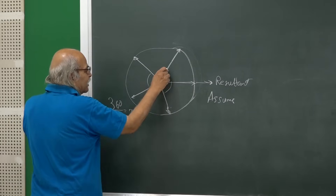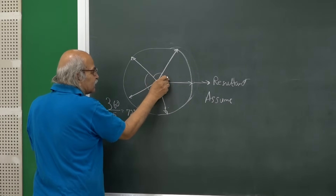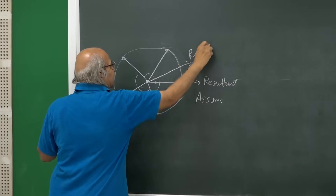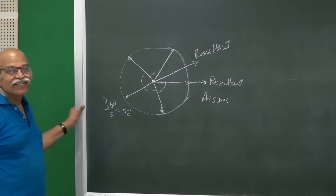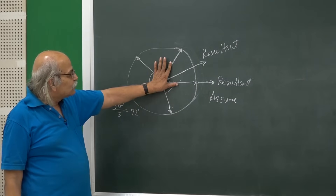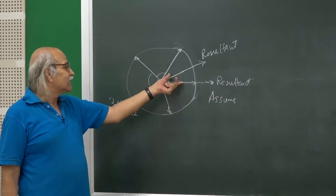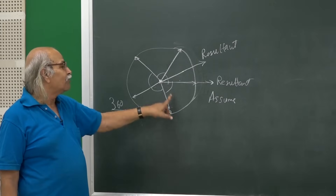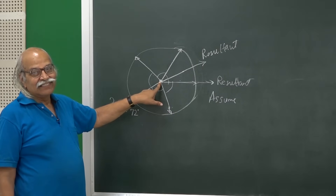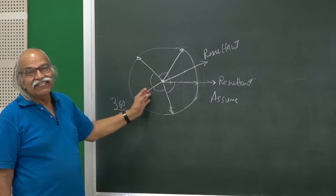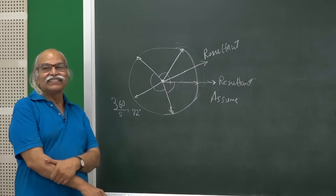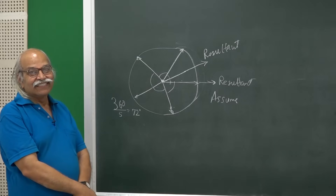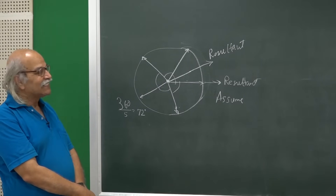Similarly, if you say the resultant is between these two forces — in this direction — the same story applies: why between these two and not between these two at the same angle? The same orientation could be here, or here, or here, or here. Any line you draw from here in this plane will have 5 competitors, and you would not be able to choose one and reject the remaining four, because all will have an identical structure. And so the only way out is that the resultant is zero.